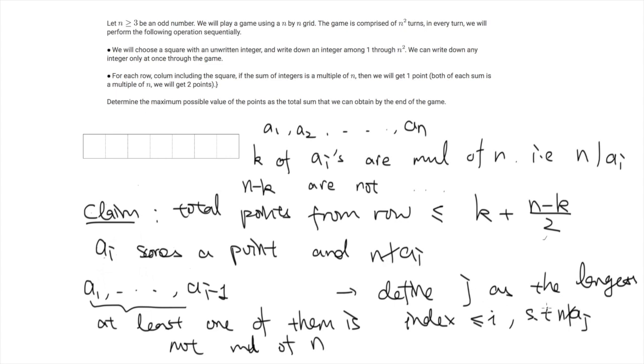For any ai which scores a point and which is not a multiple of n, I can find an aj like this. And this gives me some aj, ai couples. And it is easy to see that all these couples are disjoint. This shows that the number of points we score from these n minus k elements which are not multiples of n is at most n minus k over 2.